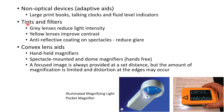The second type is tints and filters. Gray lenses reduce light intensity and yellow lenses improve contrast. Anti-reflective coating on spectacles reduces glare. All these can be provided to the patient to improve their vision.